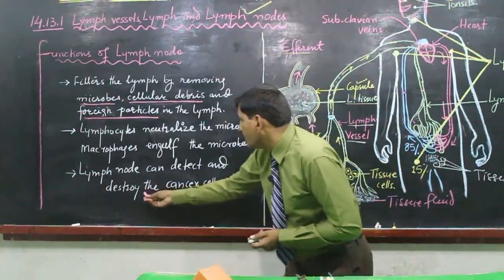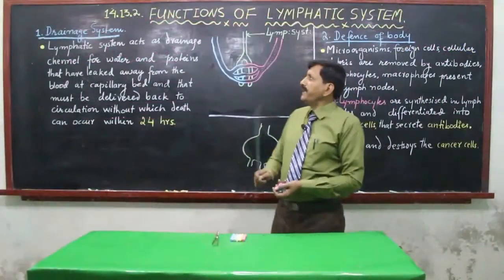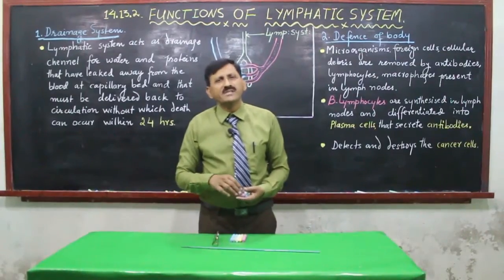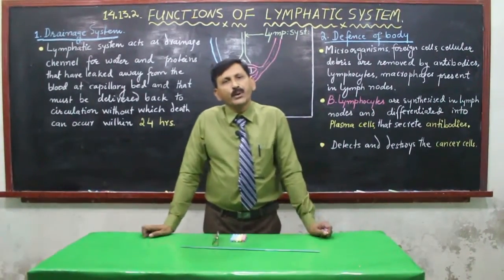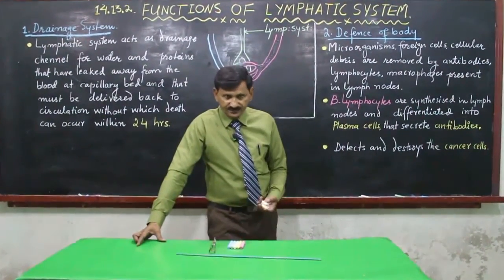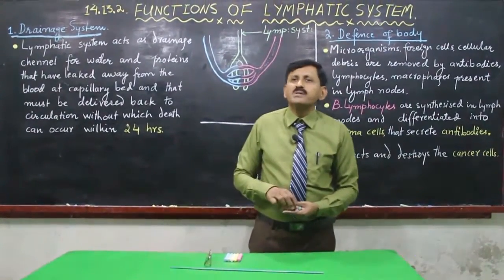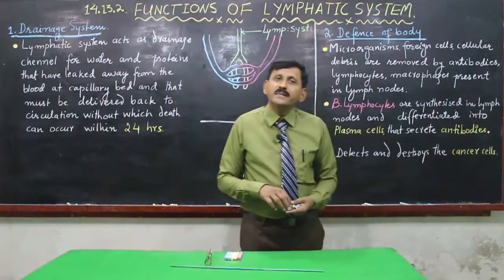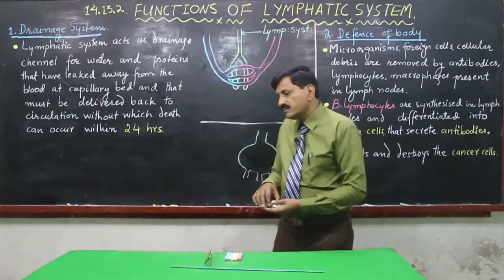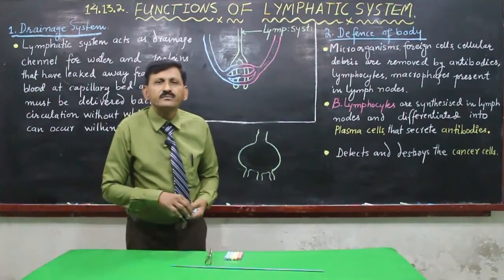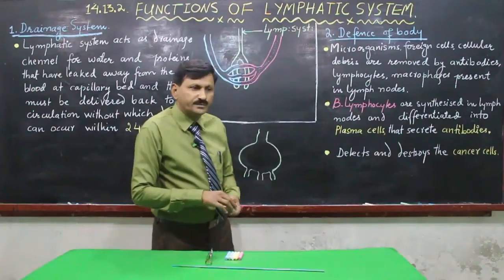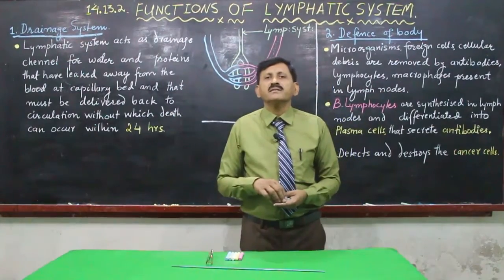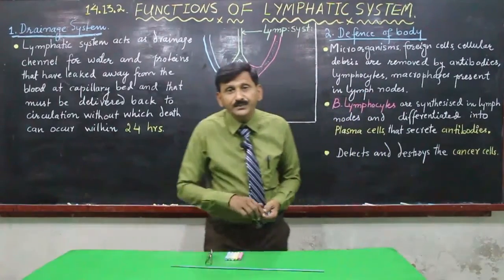The lymphatic system is absent in the central nervous system, bones, and superficial portions of the skin. However, in the tissues of these portions, very minute vessels are present known as prelymphatics. In the case of the brain, interstitial fluid drains into the cerebrospinal fluid and then goes to the circulatory system.